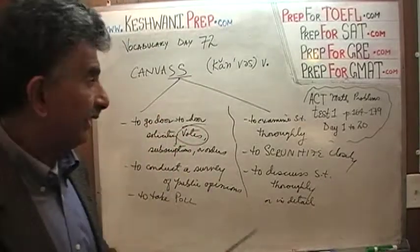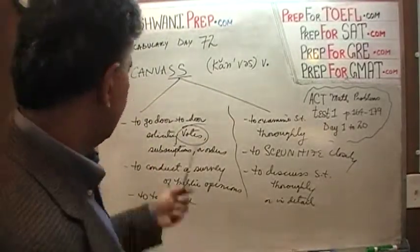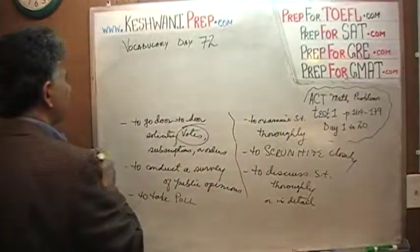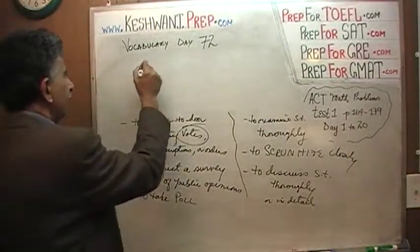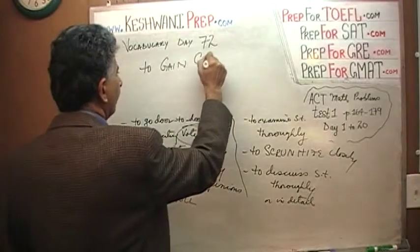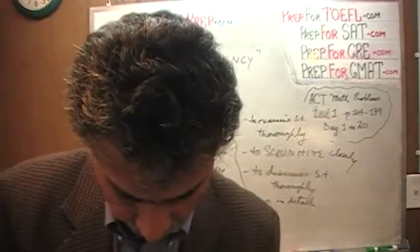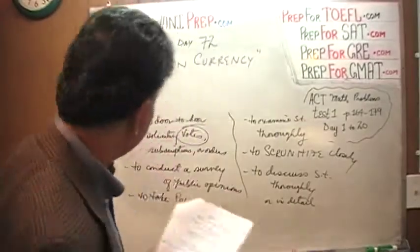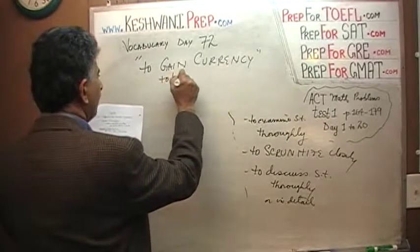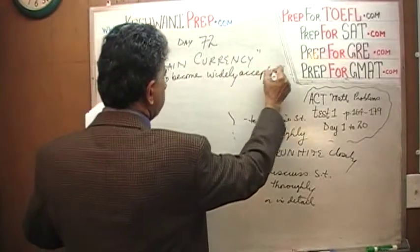Remember, it has two S's when you use it as a verb. Don't confuse the two. The first one — canvas with one S — everybody knows. It's the second one, canvass with two S's, that you have to be careful with. Now let's learn something new: the next item is not a word, it's an expression. What does 'to gain currency' mean? To gain currency means to become widely acceptable.